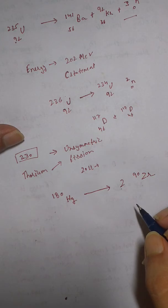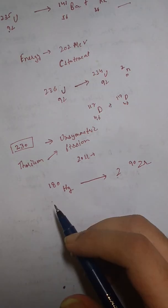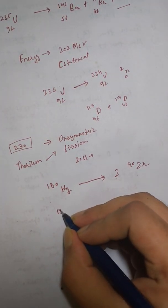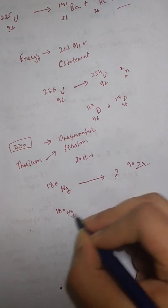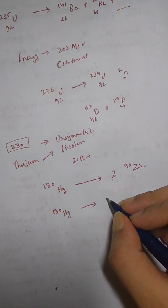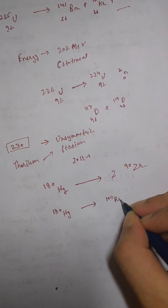But in fact it does not do so. Hg-180 rather splits into about Ru-100 and Kr-80.